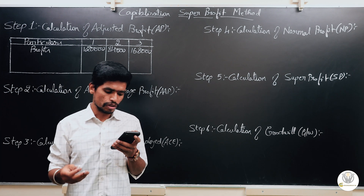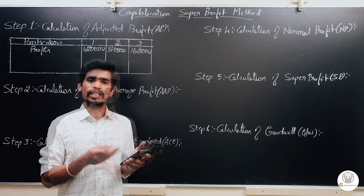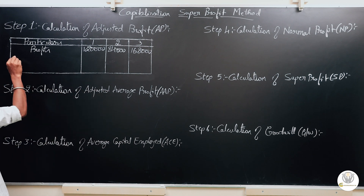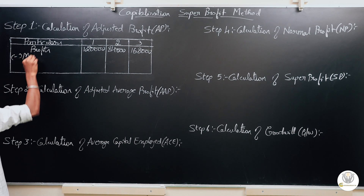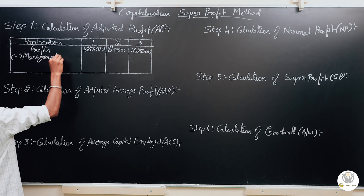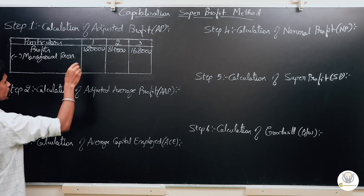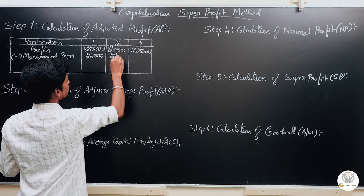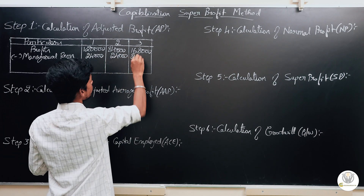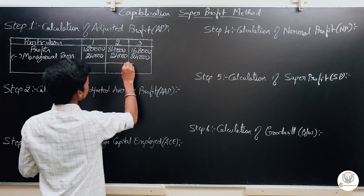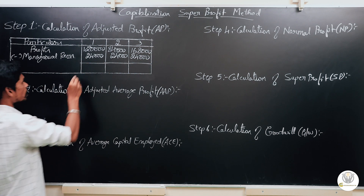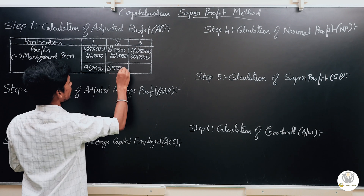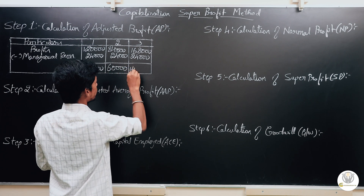Managerial remuneration of Rs. 24,000 per annum is deducted as a regular expense from the given profits each year. After deducting managerial remuneration: 1st year adjusted profit is Rs. 96,000; 2nd year adjusted profit is Rs. 60,000; 3rd year adjusted profit is Rs. 1,44,000.